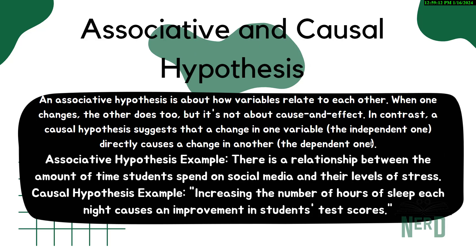Next we'll talk about associative and causal hypotheses. An associative hypothesis is like noticing that when one friend is happy, the other is often also happy — but you're not sure if one causes the other's happiness. A causal hypothesis, on the other hand, says that one thing directly causes another. For example, a causal hypothesis: increasing the number of hours of sleep each night causes an improvement in students' test scores. An associative hypothesis example: there is a relationship between the amount of time students spend on social media and their levels of stress.